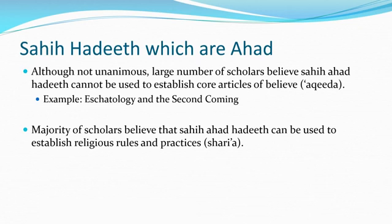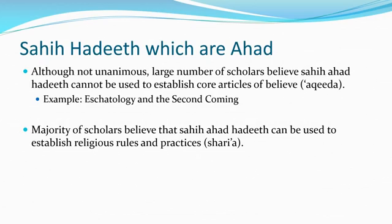Most scholars believe that mutawatir hadiths assert certainty, while sahih ahad hadiths convey only dhan — a probability that the Prophet said it, but not absolute certainty. Based on this, a large body of scholars across different schools of thought have taken the position that ahad hadiths cannot be used to establish the aqida — the core articles of belief that define Islam — because core beliefs must be based on absolute certainty.